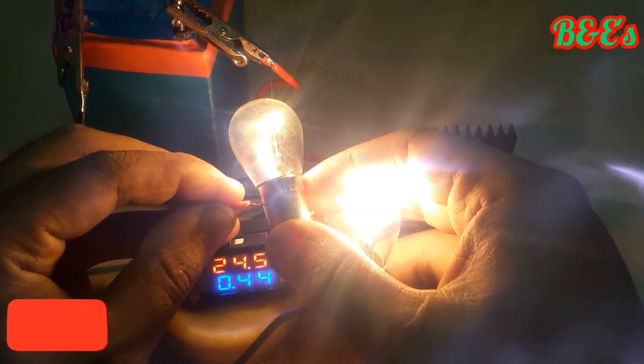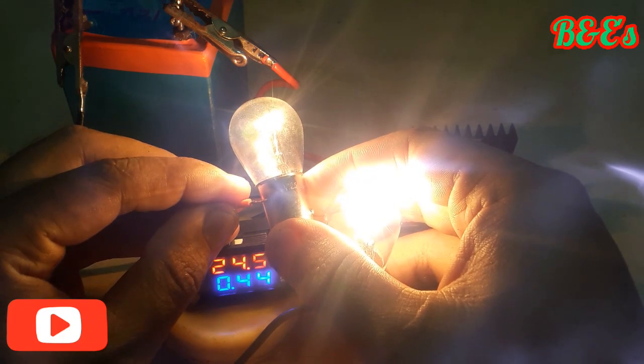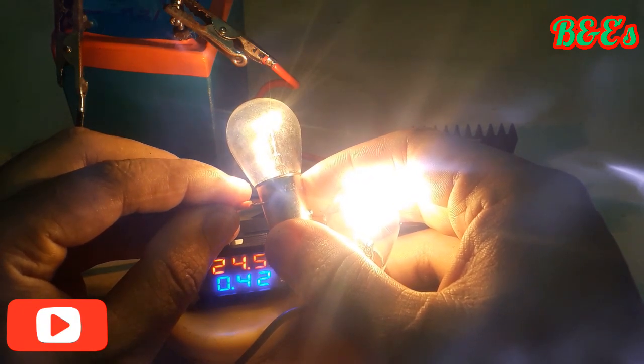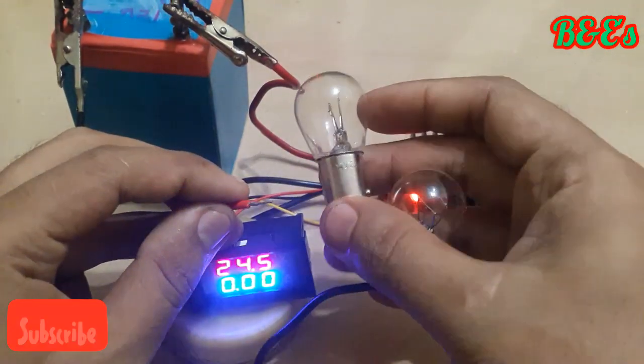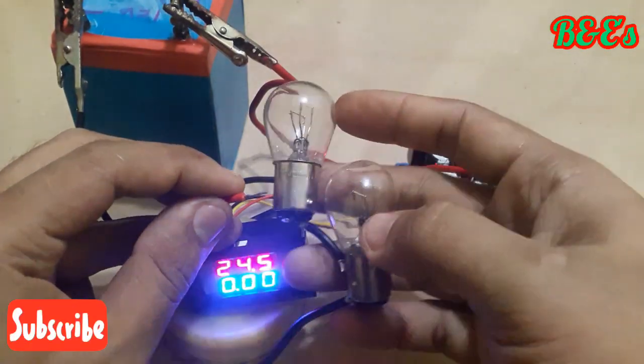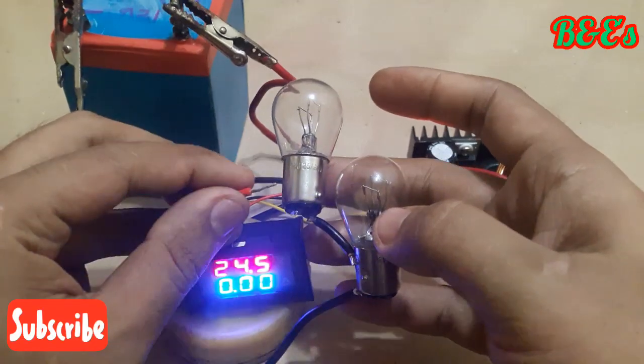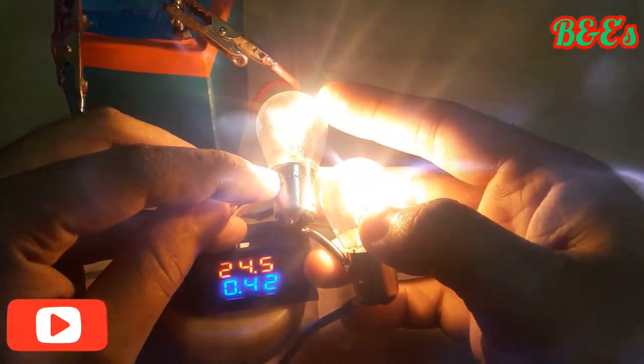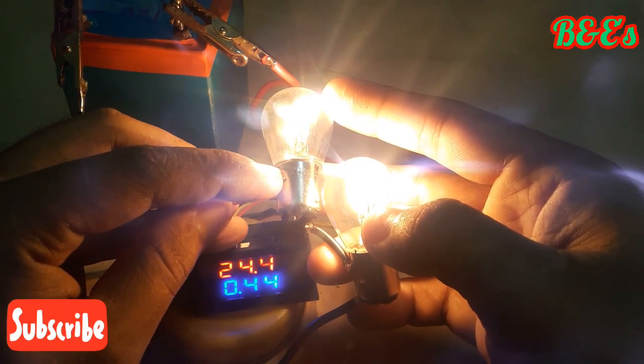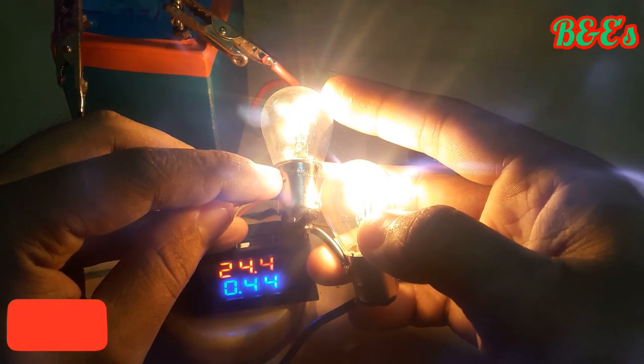It is 0.54 amps at this point. It shows 0.02 amps. This is 0.44 amps. Now the power shows 0.44 amps. You can see the power received.